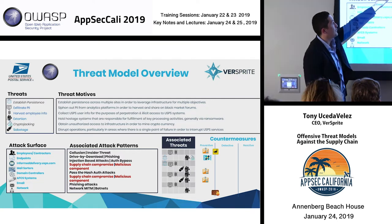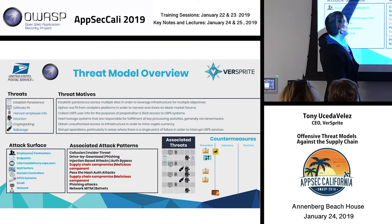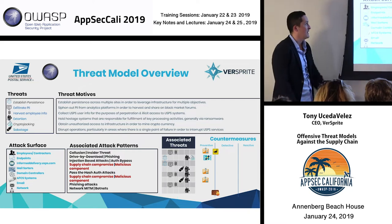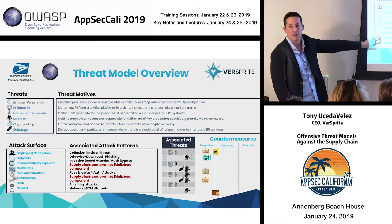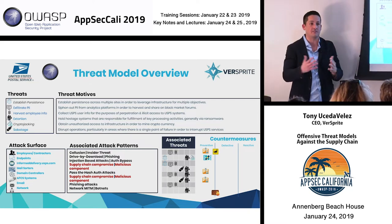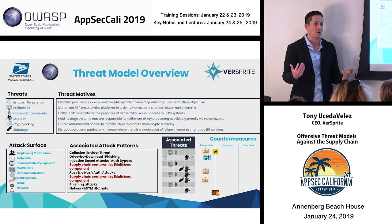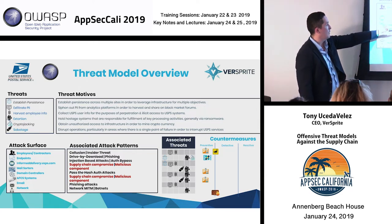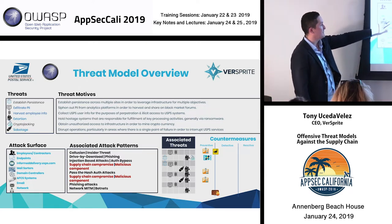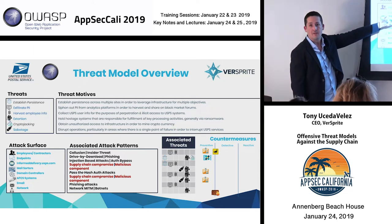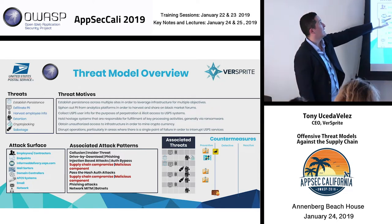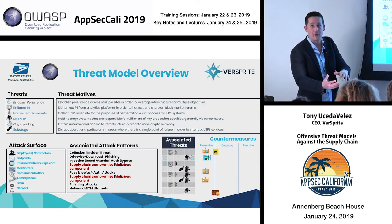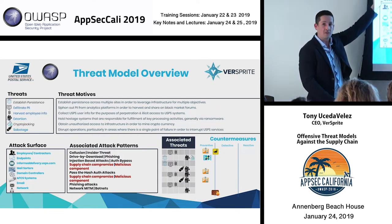Walking through the process — it goes from threat library to understanding threat motives and understanding the attack surface. This is extremely high level. If we were all working at the U.S. Postal Service, we would want to understand in greater detail what are the endpoints that are in direct line of fire to attack patterns that support these threats.